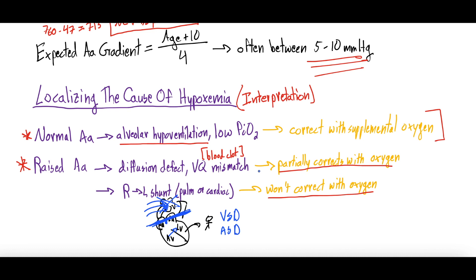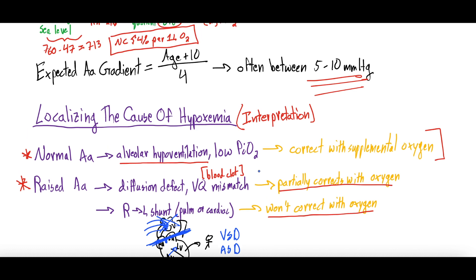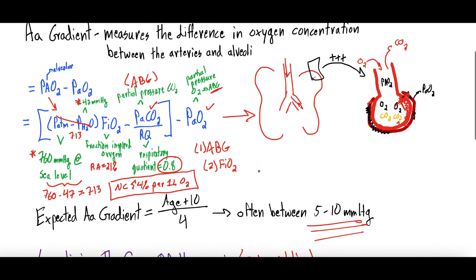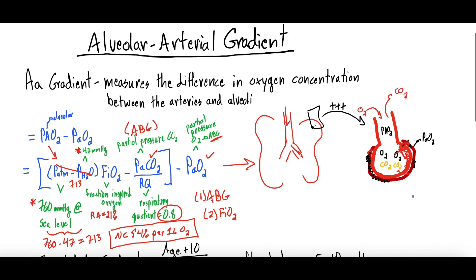That is how to calculate, understand, and interpret the AA gradient. It's a tool that probably isn't used enough clinically, and we'll be coming out with a future video on the approach to hypoxemia which uses the AA gradient in that algorithm. Let us know your thoughts, comments, and questions below, whether this was helpful, and what other topics you'd like us to cover. Stay well, keep learning, and we'll see you next time.